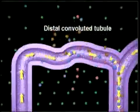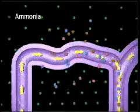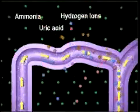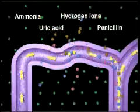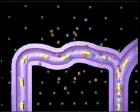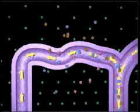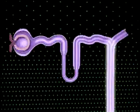In the distal convoluted tubule, secretion occurs. Some wastes — ammonia, uric acid, hydrogen ions, and penicillin — are secreted from blood vessels into the renal tubule.